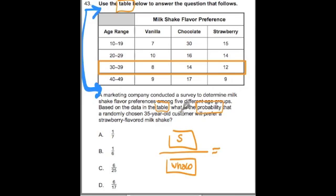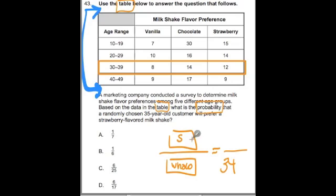The whole is going to be 8 plus 14 plus 12. I see that 2 and 8 make a nice 10, so 8 plus 12 is 20, and 20 plus 14 gets me 34. So altogether, 34 people in that age group were surveyed. Now how many of that age group like strawberry? That's my part: 12. So I have 12 out of 34.